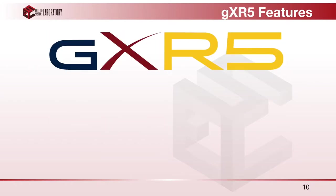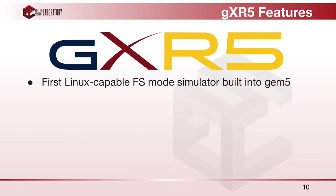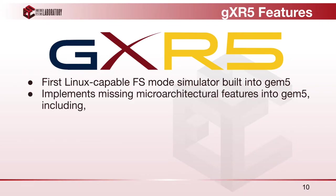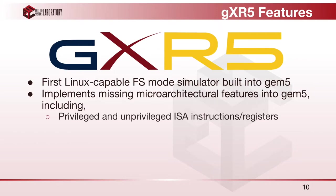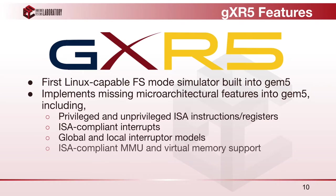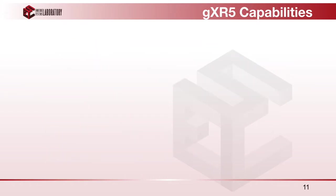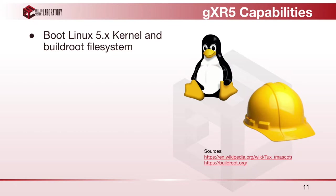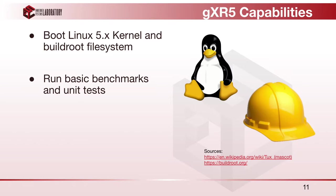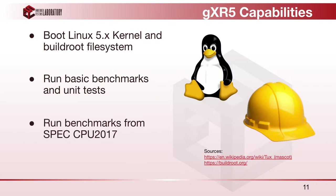The preliminary release of GXR5 implements Linux-capable RISC-V full system mode into GEM5. Using Linux kernel 5.x and a simple Buildroot image, we run a simulated simple board SOC based on Robert Scheffel's thesis, extended to model a simpler version of the HiFive Unleashed SOC. It implements missing architectural features required for RISC-V full system mode simulation, including missing instructions in privileged and unprivileged ISA specs, updated interrupt models, MMU and virtual memory support. We are able to boot the Linux kernel and file system, run basic benchmarks and unit tests, and even run a benchmark from the SPEC CPU 2017 suite.